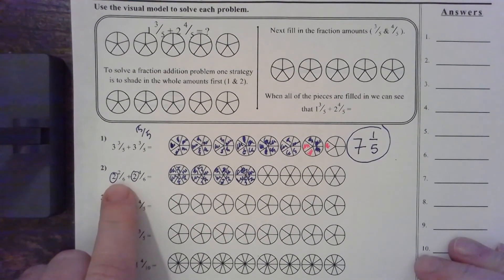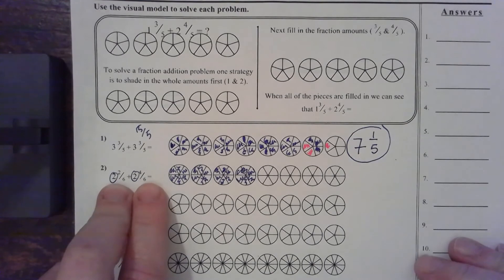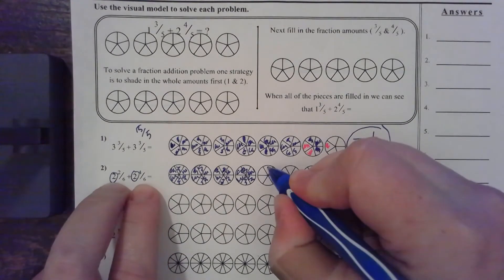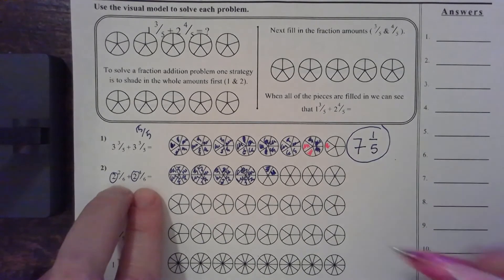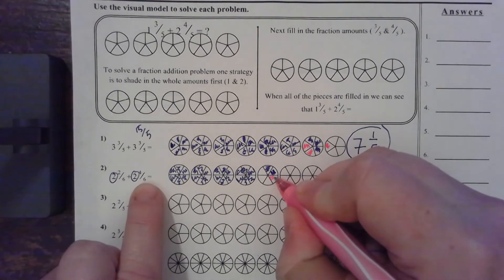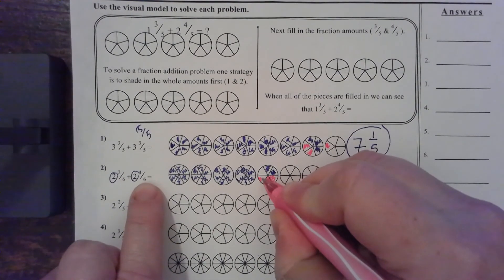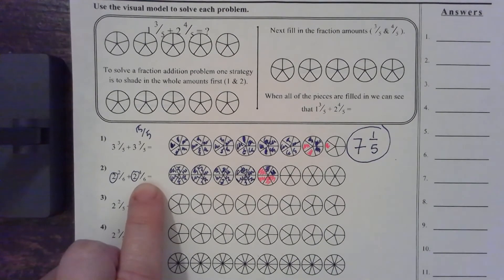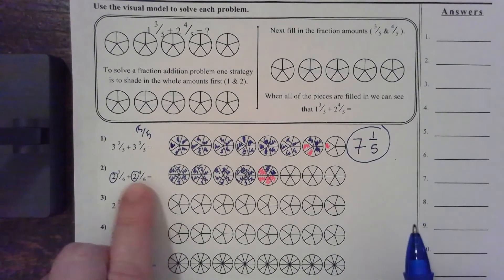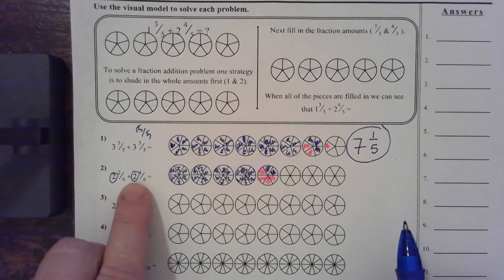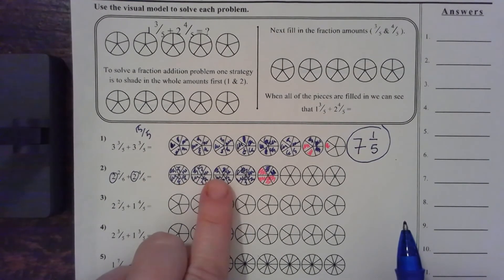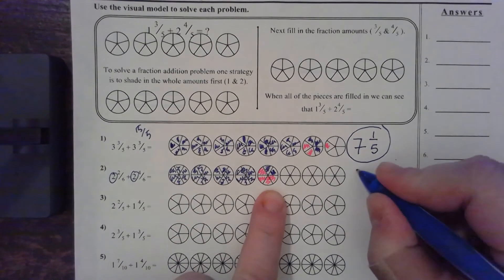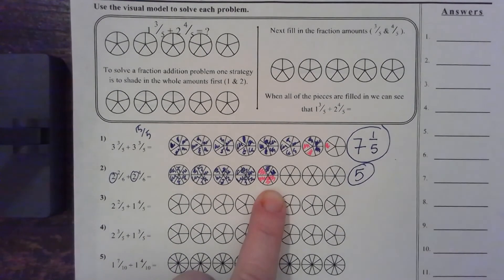So, now, I have two-sixths plus four-sixths. So, I'm going to go right here and color in one, two. That's my first one. And then, four. One, two, three, four. So, now, when I do my answer, two and two-sixths plus two and four-sixths equals one, two, three, four, five.